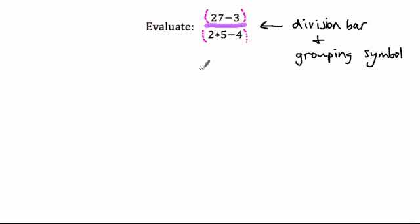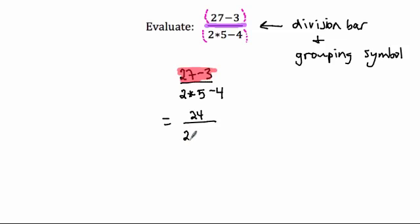Writing the problem: 27 minus 3 over 2 times 5 minus 4. I'll do the top first. The subtraction on top: 27 minus 3 is 24, giving 24 over 2 times 5 minus 4. Now I'm done on top, so I work the bottom. On the bottom I have multiplication and subtraction — multiplication comes first. So 2 times 5 is 10.